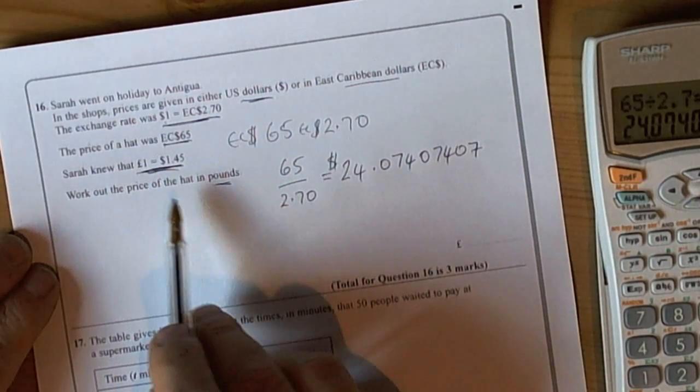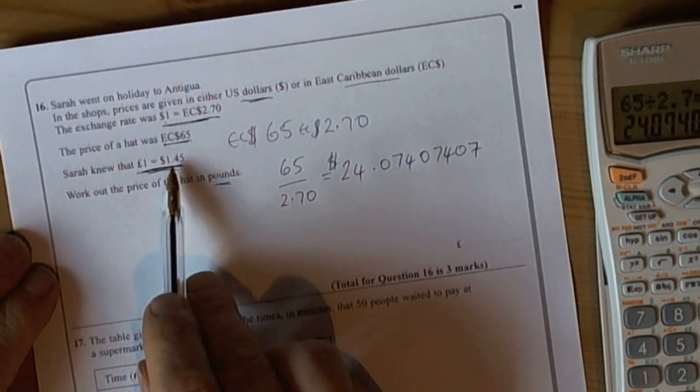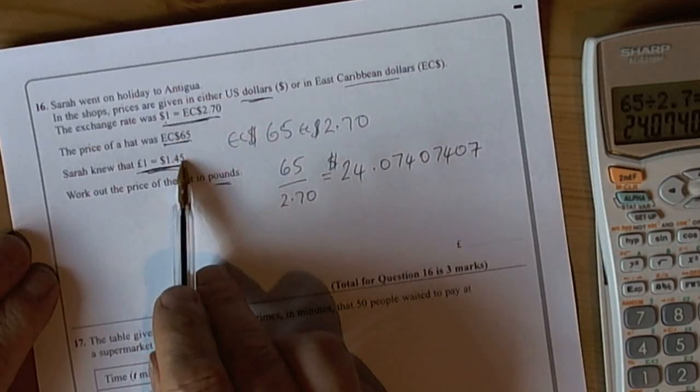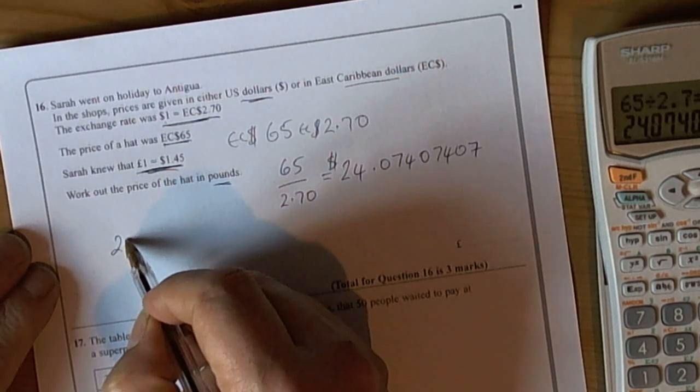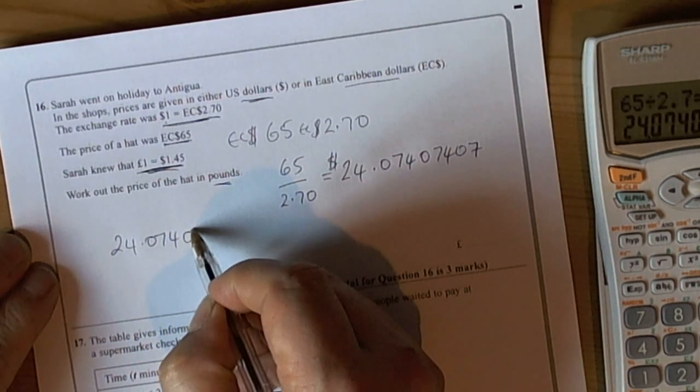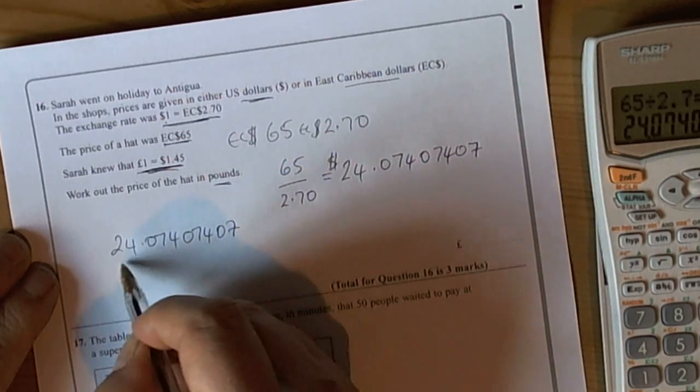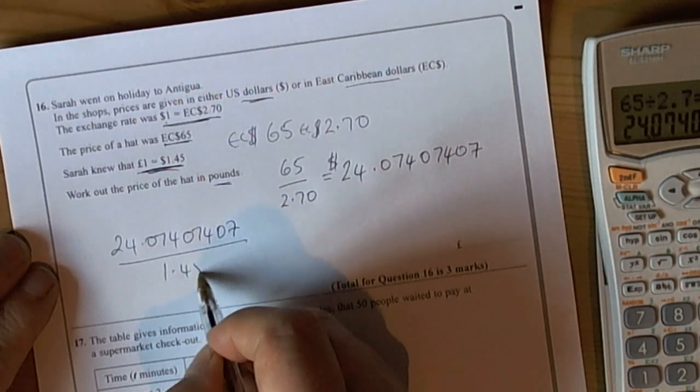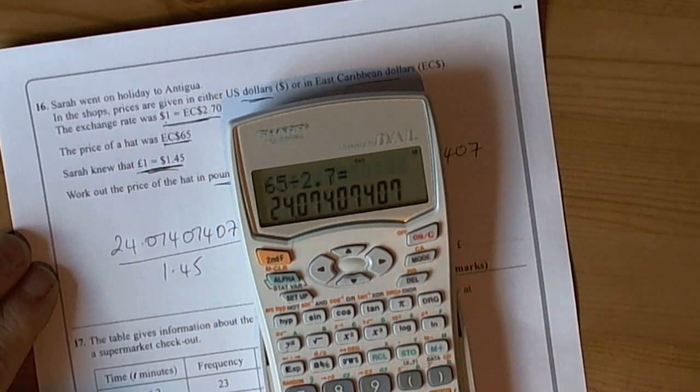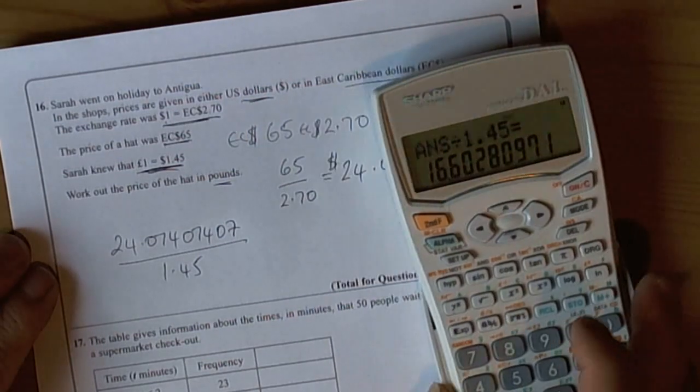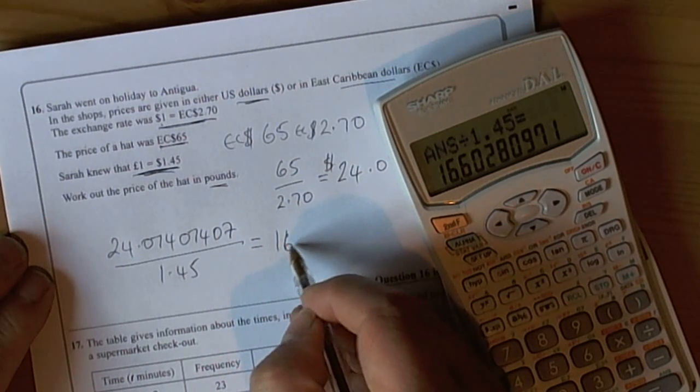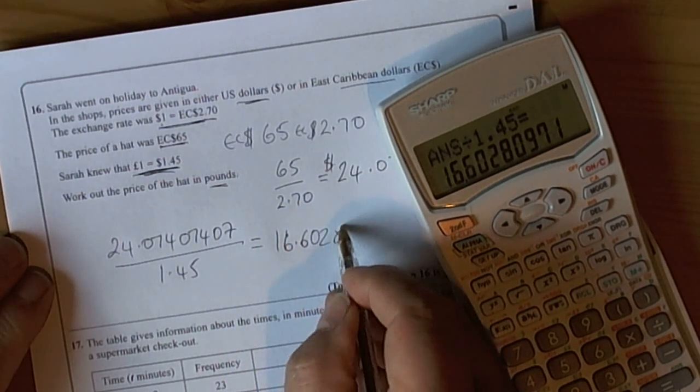Now we can go straight to pounds because we know the US dollar conversion. To go from US dollars back to pounds, we're going to have to divide again. So we're going to end up doing the 24.07407 divided by 1.45. We left that number in our calculator because we knew we were going to use it, so it saved us having to retype it.